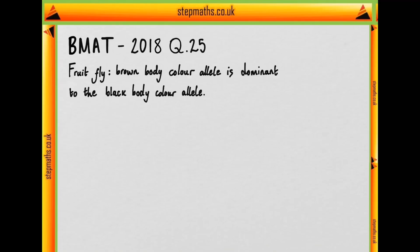In question 25, we're told about a type of fruit fly in which the brown body color allele is dominant to the black body color allele.